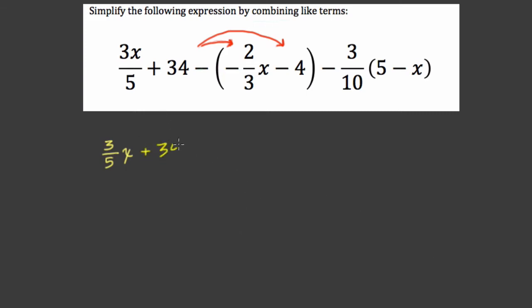And I think you'll see that in a moment. So we have, where we wrote the expression, plus 34. Now we subtract negative 2 thirds x. Subtracting a negative is the same thing as adding. So we add 2 thirds x. Subtracting another negative 4, that's the same thing as adding 4. Now we have minus 3 tenths times 5 minus x. So the first thing I did was distribute this negative sign, or we can think of it as distributing negative 1. The second thing I'll do is right here. I'll use the distributive property to multiply 3 tenths, or we can think of this as negative 3 tenths times 5 and negative 3 tenths times negative x.